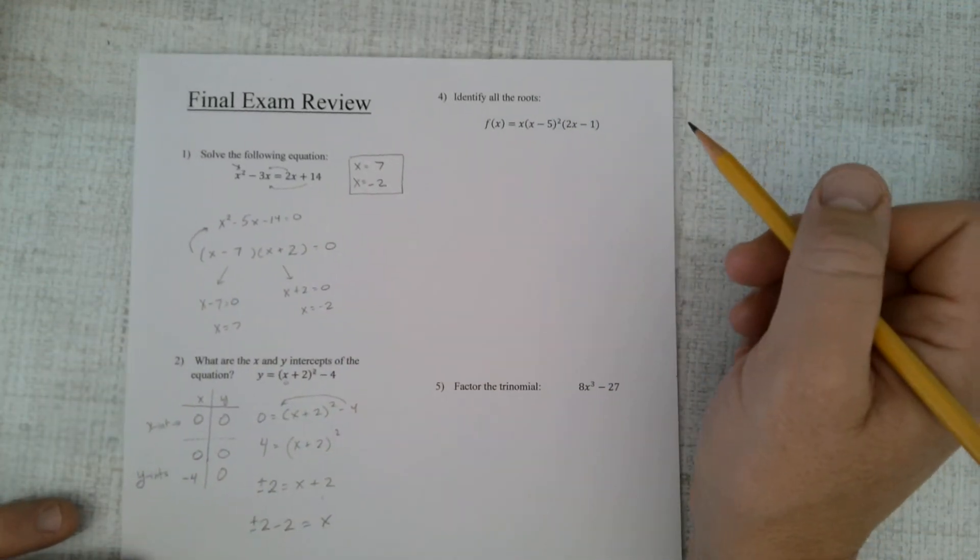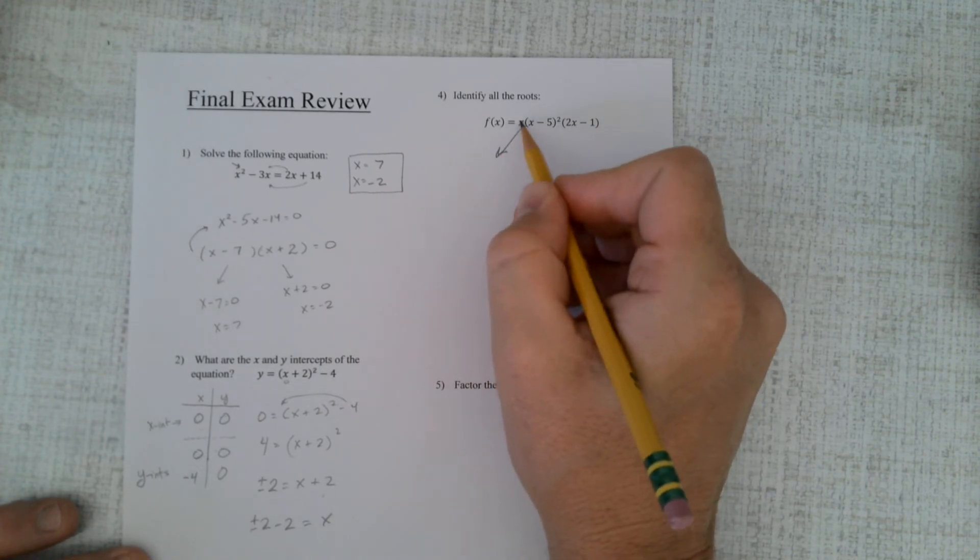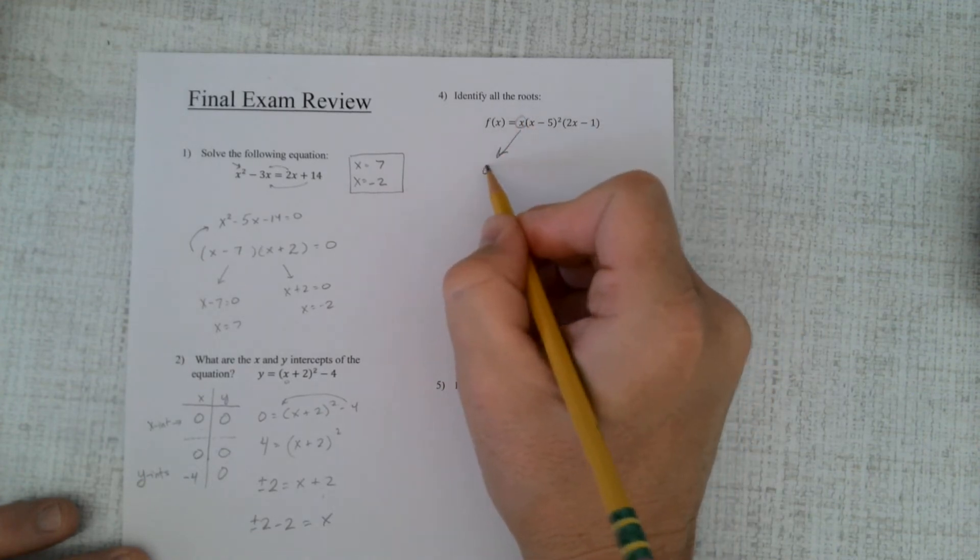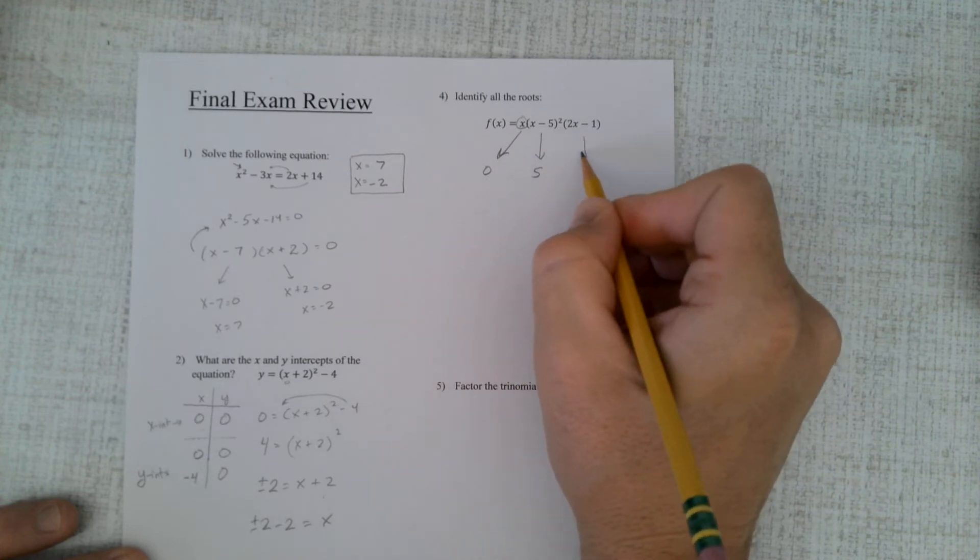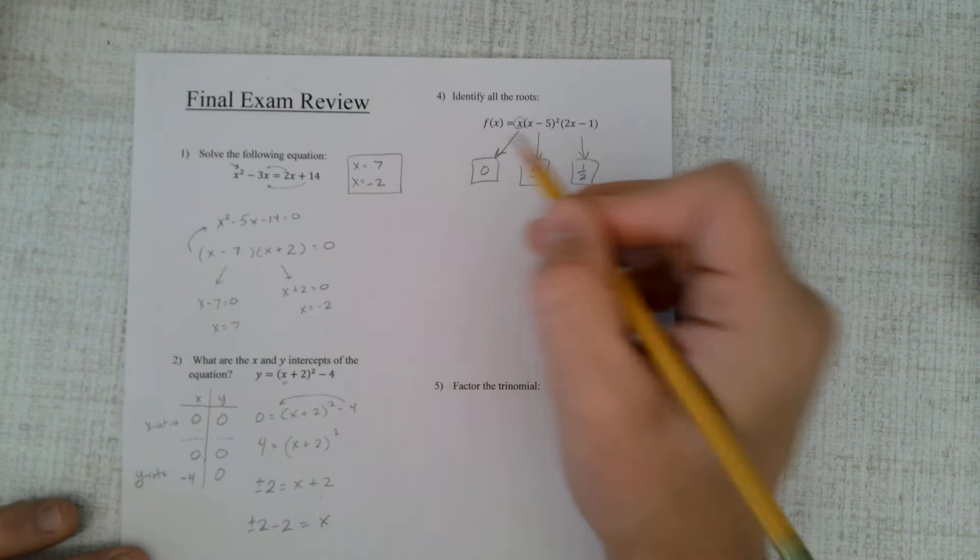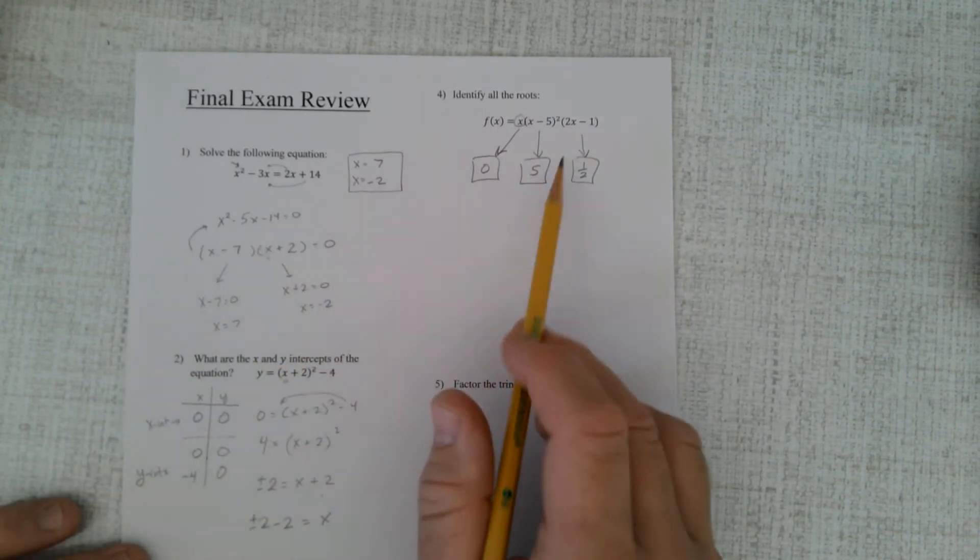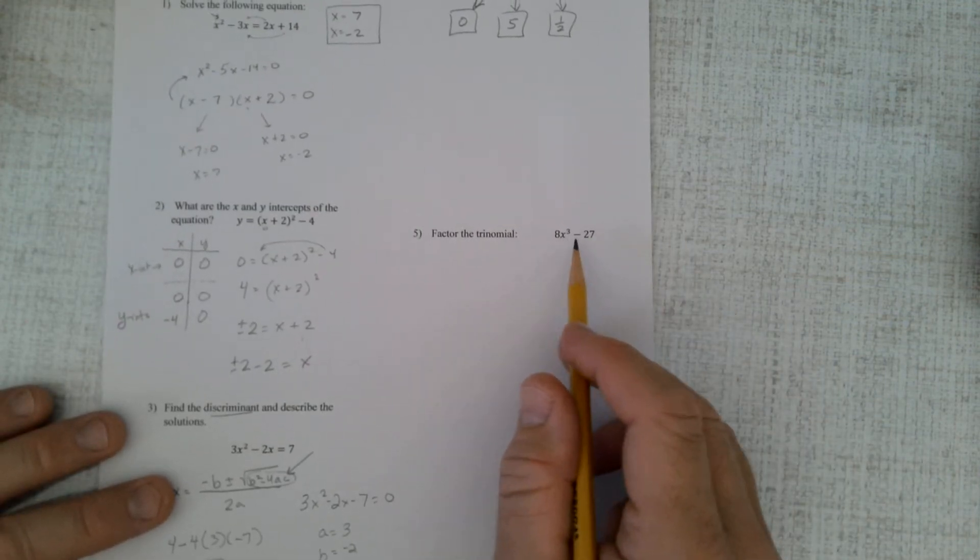Alright, identify the roots. Well, this is simply the same thing here where you figure out, what makes this 0? Well, that's a 0. What makes this 0? 5. And what makes this 0? Well, that'd be 1/2. So there's my roots. It's this exact same problem. However, they already factored it for you. I factored the trinomial.